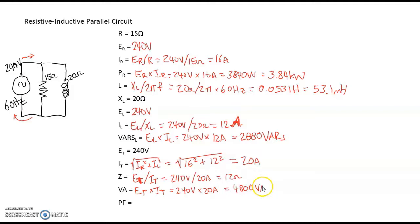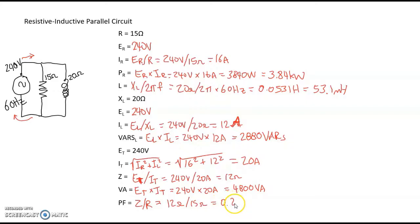Finally, power factor — there are different ways to calculate it. I'm going to use total impedance over resistance: 12 ohms divided by 15 ohms equals 0.8, or 80%. And just a quick correction: for total impedance, it is total voltage divided by total current.